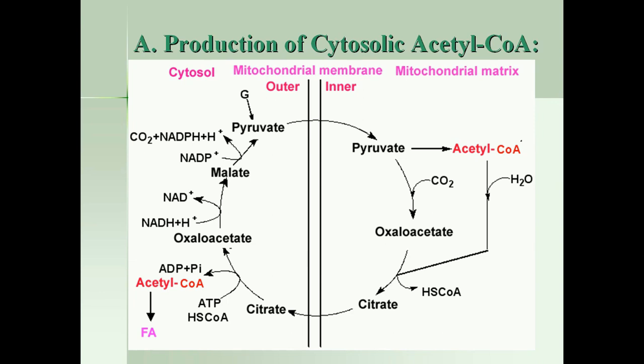During oxidation in mitochondria, the acetyl-CoA produced — the coenzyme A part of acetyl-CoA — is unable to translocate from the mitochondrial matrix to the cytosol. So this acetyl-CoA first condenses in mitochondria with oxaloacetate via citrate synthase enzyme to convert into citrate. Citrate is then able to translocate from the mitochondrial matrix to the cytosol.